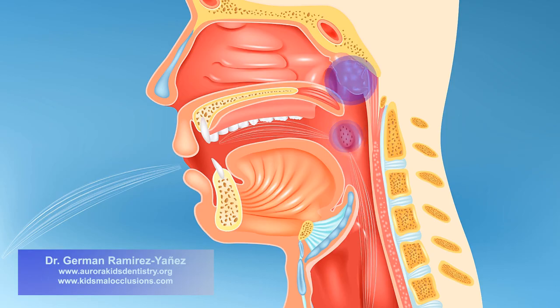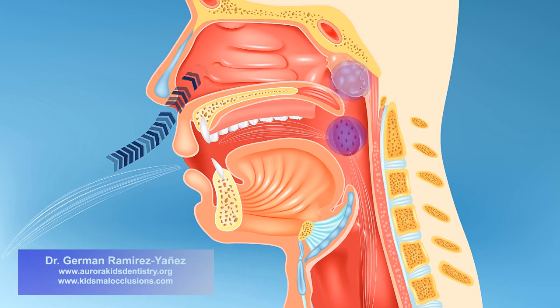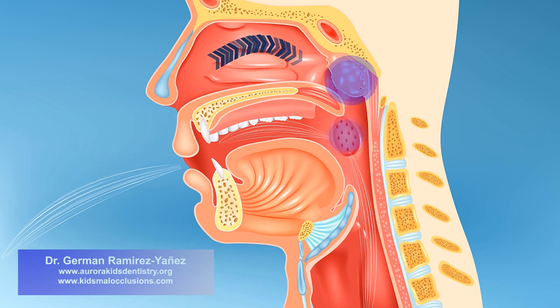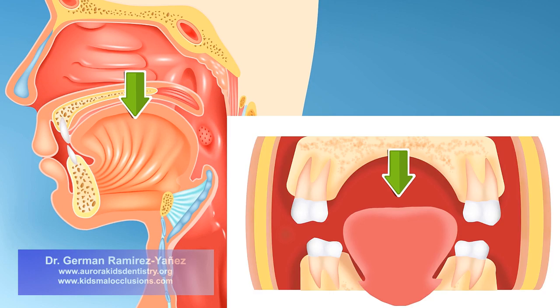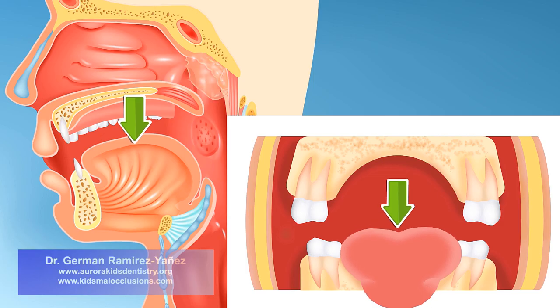As a consequence, that lymphoid tissue overgrows, occupying a large volume of your throat. That makes nasal breathing more difficult, and you make a habit of breathing through your mouth. In order to breathe through your mouth, your lower jaw has to come down, and your tongue has to rest on the floor of your mouth.